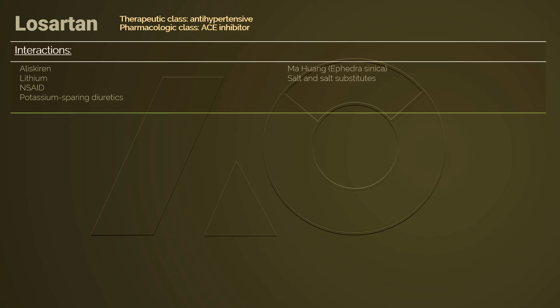Aliskiren, the active renin inhibitor, can add to the risk for hypotension, hyperkalemia, and renal impairment in diabetic patients or those with severe renal insufficiency. It is not recommended to use both aliskiren and Losartan for a diabetic patient.